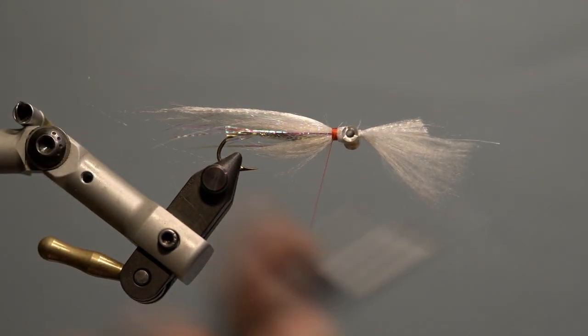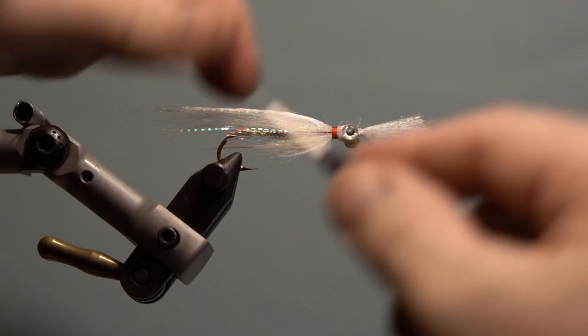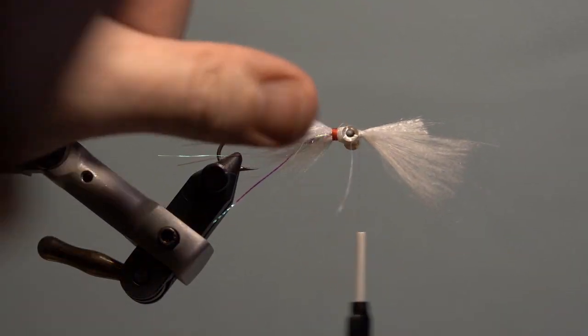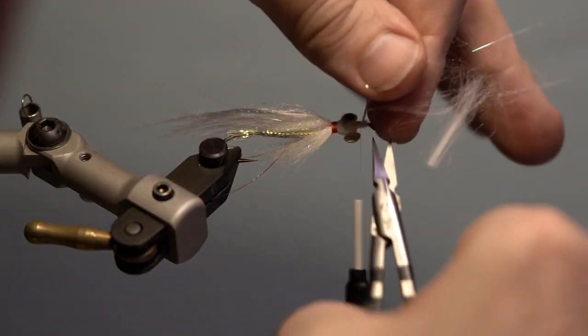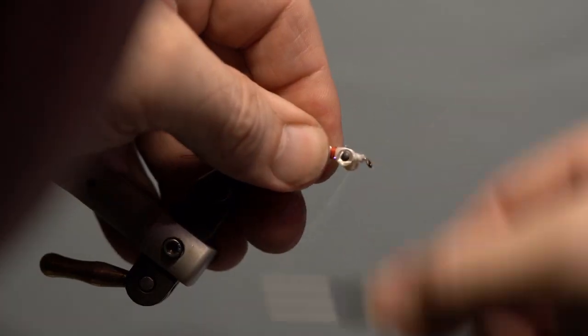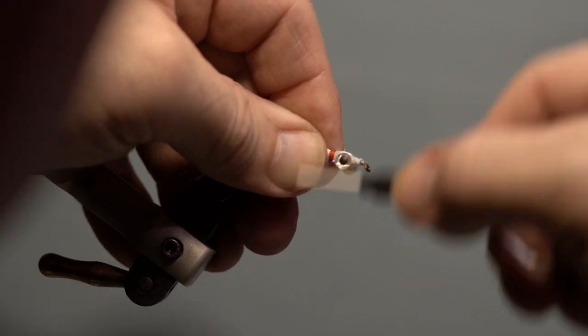Next, cover the white portion of the thread with red thread. Whip finish and add head cement. Start the thread again in front of the eyes and trim the excess wing material on an angle. Build up your thread and whip finish.